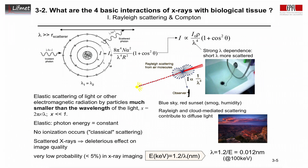If we take 10 keV X-rays instead of 100 keV, we get a wavelength of 0.12 nm, or 1.2 angstroms. This is still very small compared to the size of most molecules that we encounter, so Rayleigh scattering remains negligible for X-ray imaging.